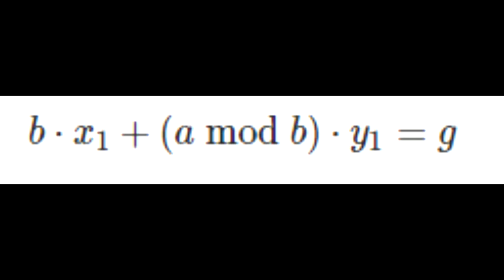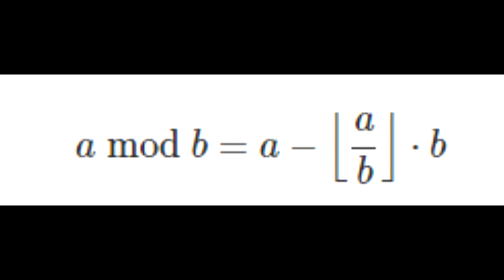So substituting the values into the equation, we get B times X1 plus A mod B times Y1 is going to equal G. We're basically trying to get this equation back to the original equation of A times X plus B times Y equals G. Since we know that the definition of modulus A mod B is equal to A minus floor of A divided by B times B, we are going to use this to substitute back into the equation of A mod B.